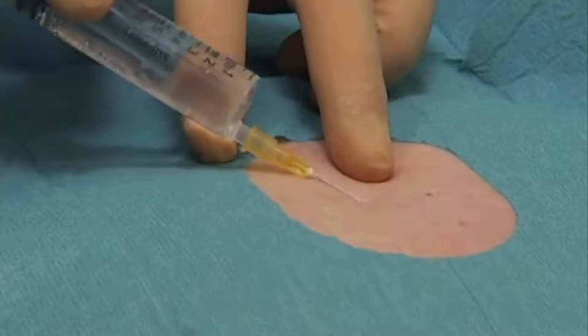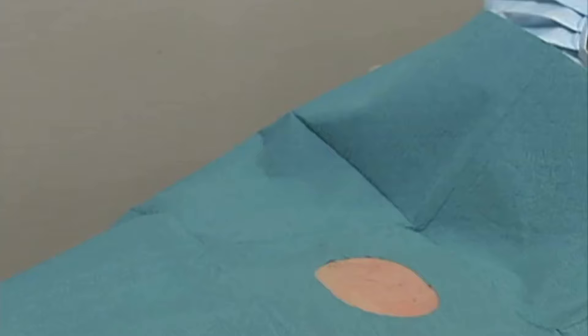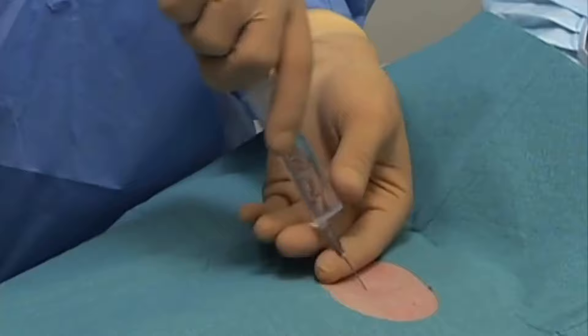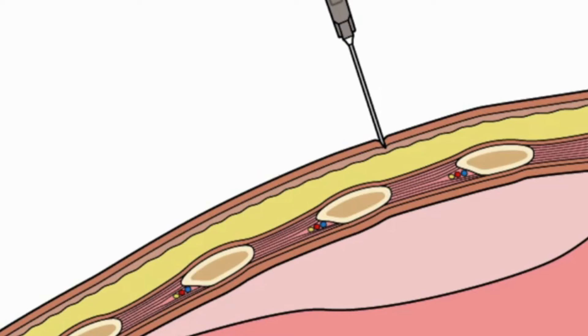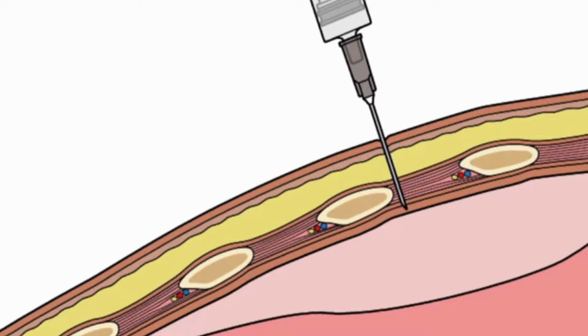Inject a wheal of lidocaine at the superior edge of the third rib at the midclavicular line. Switch to a 22-gauge needle and anesthetize the deeper layers of tissue by inserting the needle at an angle perpendicular to the skin. Before injecting the anesthetic, always aspirate the site to make sure the needle has not entered a blood vessel. Progress with the needle just over the top of the third rib through the intercostal muscles in the direction of the pleural space. This will prevent injuries to the intercostal vessels and nerves, which lie just below the ribcage.